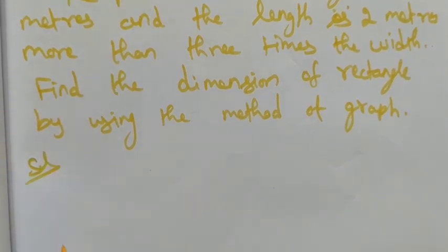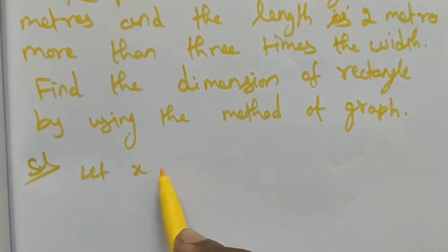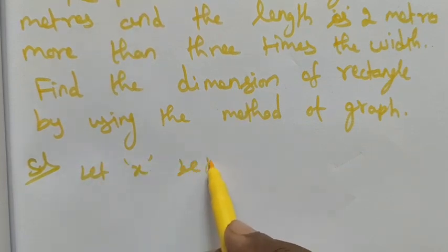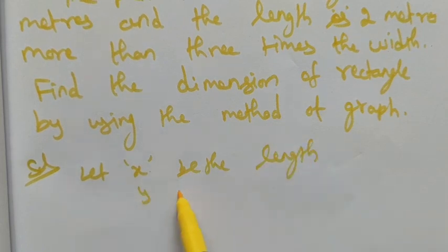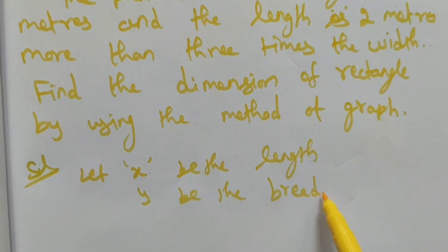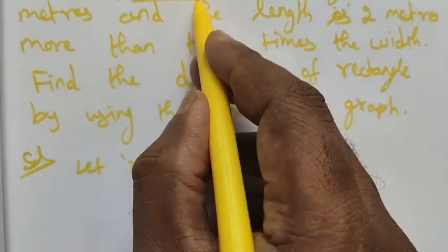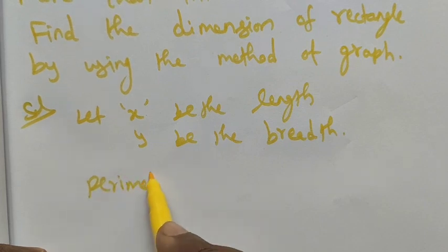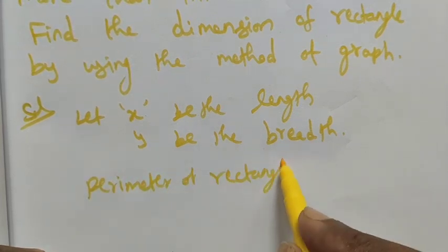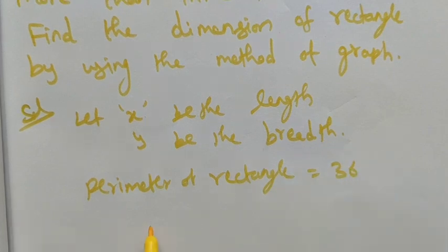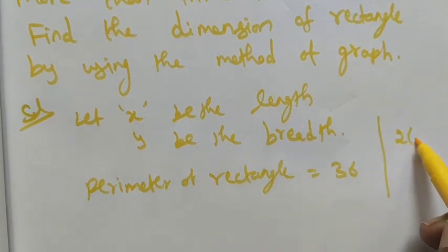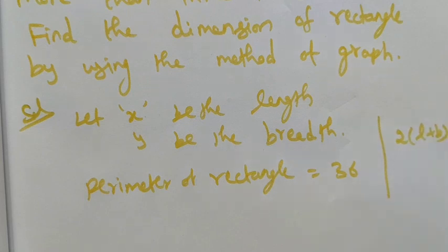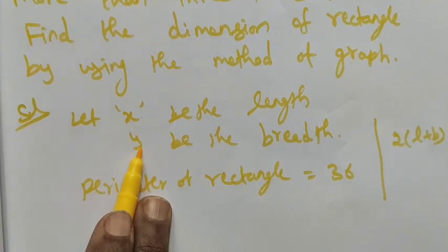Solution: The perimeter of the rectangle is given. Let x be the length and y be the breadth. First condition: the perimeter of the rectangle is 36 meters. We know the formula for perimeter — by the general formula, 2 into (l + b) is the perimeter formula. Here length is x and breadth is y.